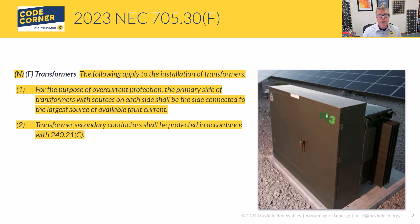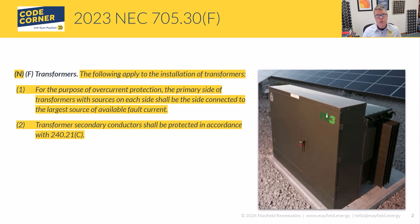Now when we talk about a grid-direct PV system, we see situations where installers are putting in a 480V inverter — so the output of the inverter is 480V — but the utility you're trying to connect to is 208V. So we're stepping 480 down to 208 to go to the utility, reversing the traditional power flow. What number one here is saying is that the primary side will be considered the side connected to the highest available fault current — and in our PV direct systems, that's going to be the utility side.